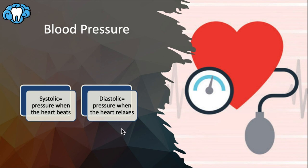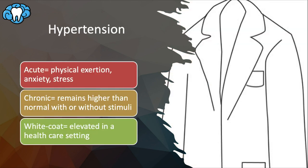Untreated or uncontrolled hypertension — higher than normal blood pressure that stays consistently high — can cause systemic issues like stroke, heart attack, kidney failure, and vision problems. Hypertension can be acute, caused by a stimulus like physical exertion, anxiety, or stress, which normalizes once the stimulus goes away. Chronic hypertension remains consistently high with or without a stimulus. White coat hypertension is elevated blood pressure only in a healthcare setting — a specific type of acute hypertension more prevalent in older populations.